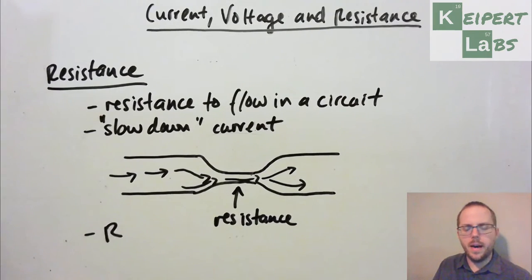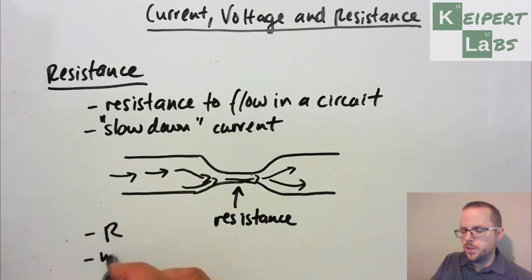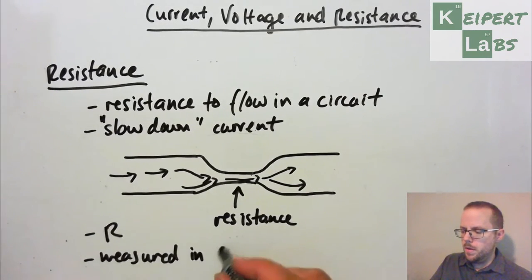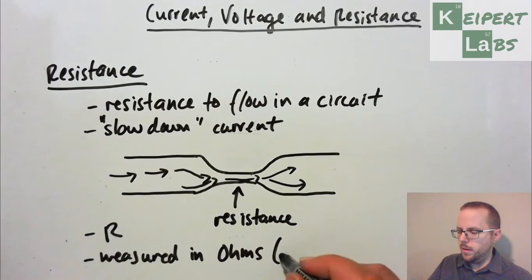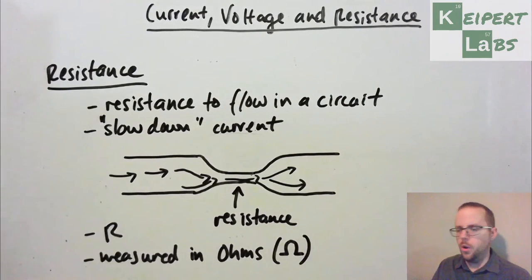It's given the symbol of a capital letter R and it's measured in units called ohms, which is given the symbol of the Greek letter omega. Ohms for omega. Omega was the final letter in the alphabet in Greek. In the Bible it talks about Jesus being the alpha and the omega, the first and the last. Because alpha is the first letter, omega is the last letter. So we have current, voltage and resistance.